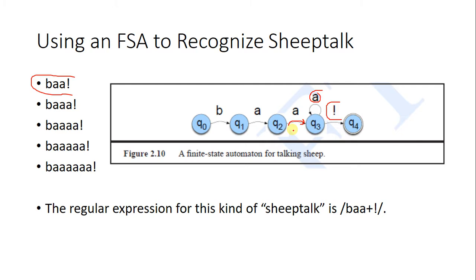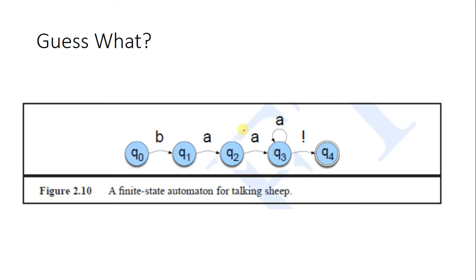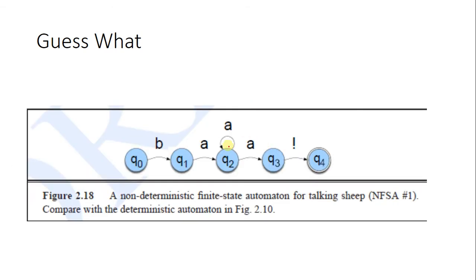In a non-deterministic finite automata (NFA), we may have more than one path at some state for a single input. For example, at state q2 for the same input 'a', we have more than one path — if we read 'a' at q2, we can move towards q3 or stay at q2. This causes confusion while traversing because we do not know whether to move forward or stay at the same state. These types of automata are called non-deterministic finite automata.